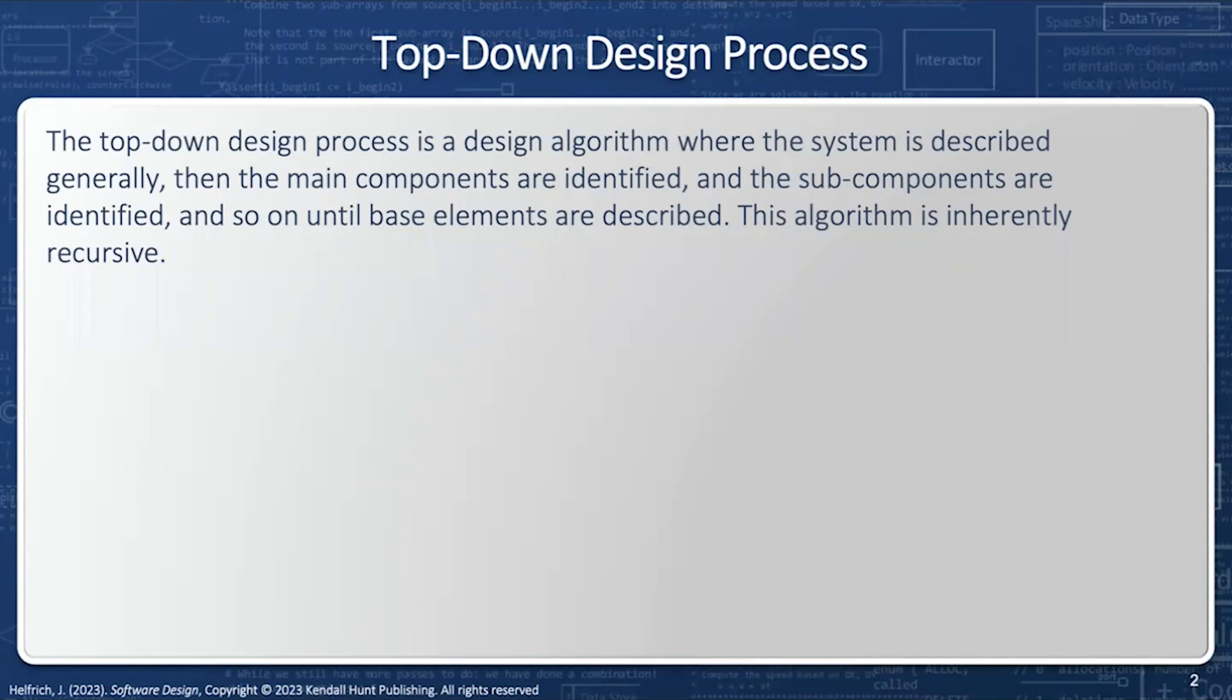The top-down design process is a design algorithm where the system is described generally, and then the main components are identified, and the sub-components are identified, and so on until the base elements are described. This algorithm is inherently recursive.